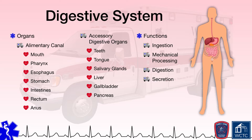Secretion occurs within both the digestive tract and some of the accessory organs. At some point, the food is broken down within the digestive system to the point where organic substrates, electrolytes, vitamins, and water are absorbed through the digestive tract into the body. Lastly, any pieces of food that cannot be digested are excreted as feces through the process of defecation.